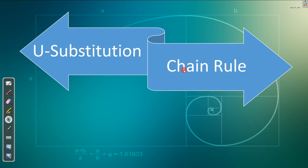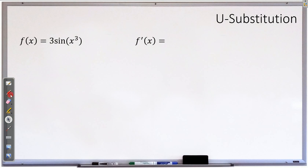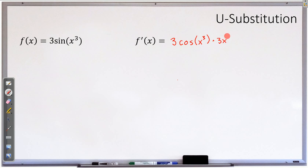You can see the arrows — the chain rule is the derivative that works one way, and u-substitution is the anti-derivative that works back the other way. So what is u-substitution? Let's start with something we know: derivatives. If I take the derivative of f of x, it takes the chain rule. You take the derivative of the outside, which is 3 cosine, the inside stays the same, times the derivative of the inside. So f prime of x is equal to 9x squared times cosine of x cubed.